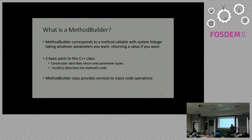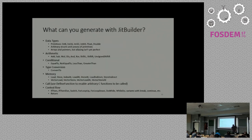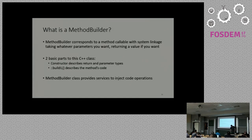The method builder is what you use to define what a method is in your runtime - its parameters, types, and what return value you want back. Everything being generated uses system linkage, so basically it's like making a C call when you invoke one of these JIT-compiled functions. There are more tricky things when the JIT is calling the JIT later on, but for the most part it's like a C call. The two main parts of the method builder are the constructor and the build IL method.